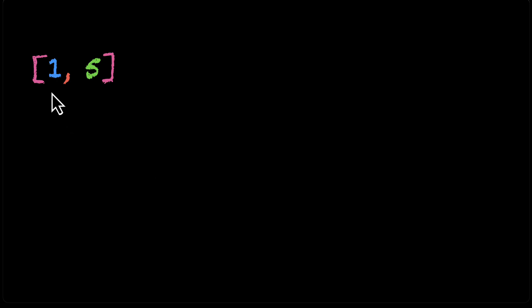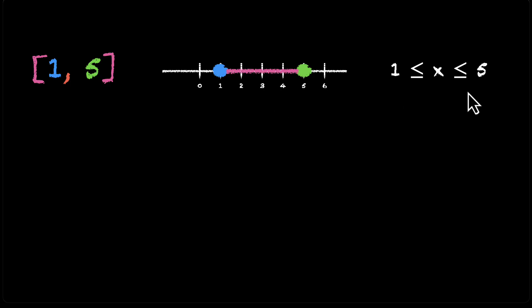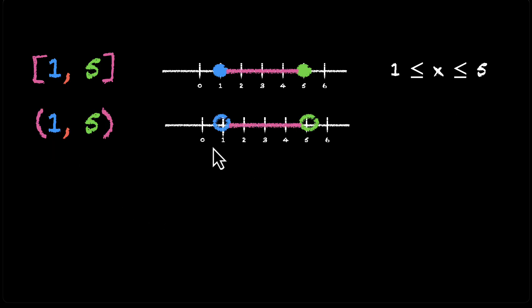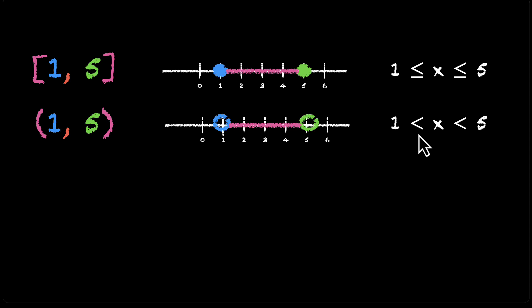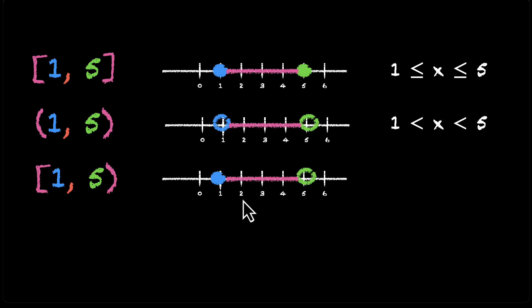Let's summarize. For the set of all real numbers from 1 to 5 including both — [1, 5] — both circles are filled on the number line, and algebraically x satisfies 1 ≤ x ≤ 5. When we don't include 1 and 5, we use curved brackets (1, 5), the circles are open, and algebraically x satisfies 1 < x < 5 — a strict inequality, not greater than or equal to. For [1, 5) we include 1 but not 5: filled circle at 1, open at 5, and x satisfies 1 ≤ x < 5.